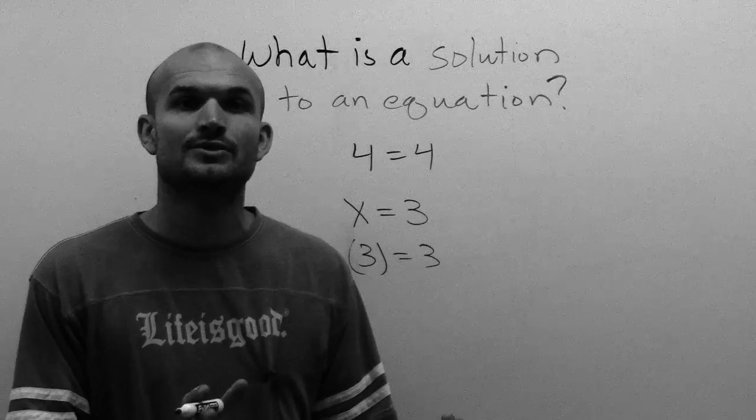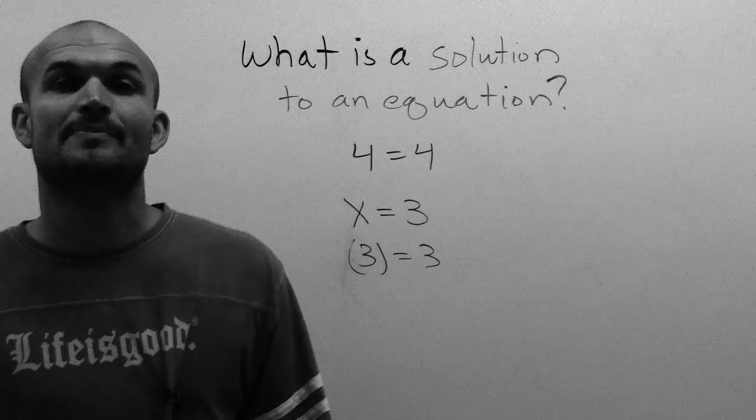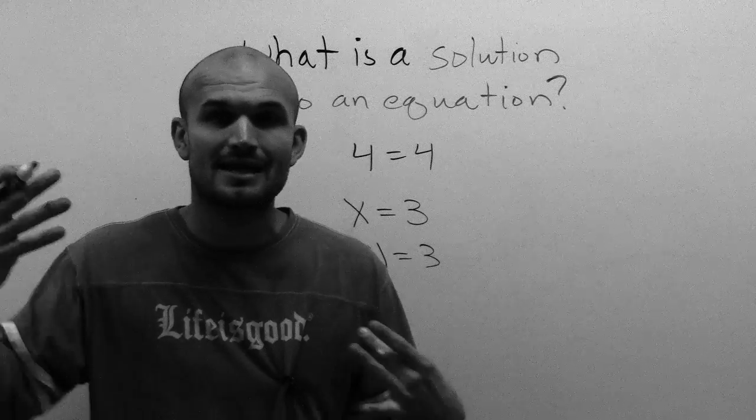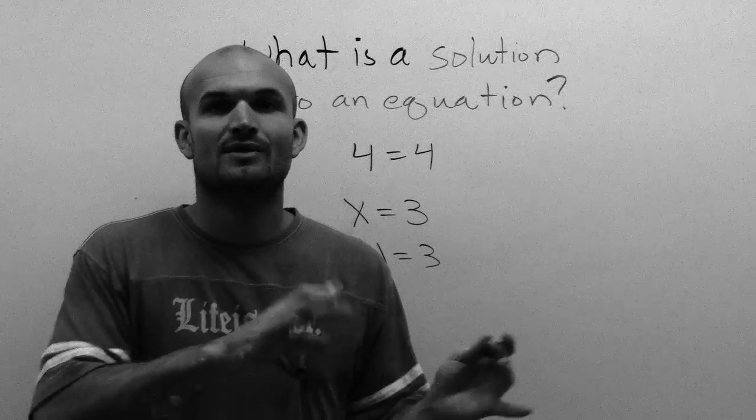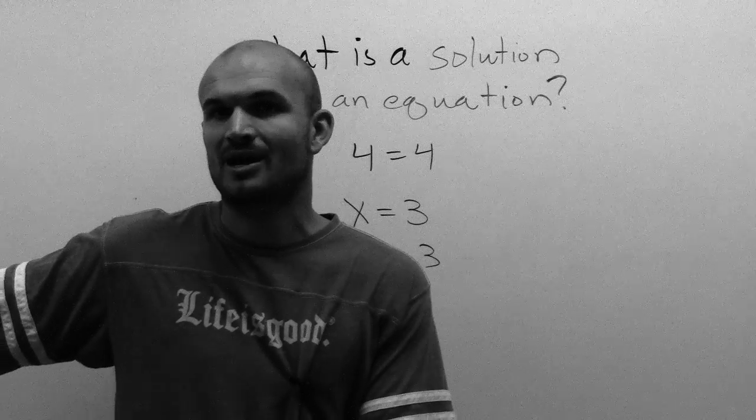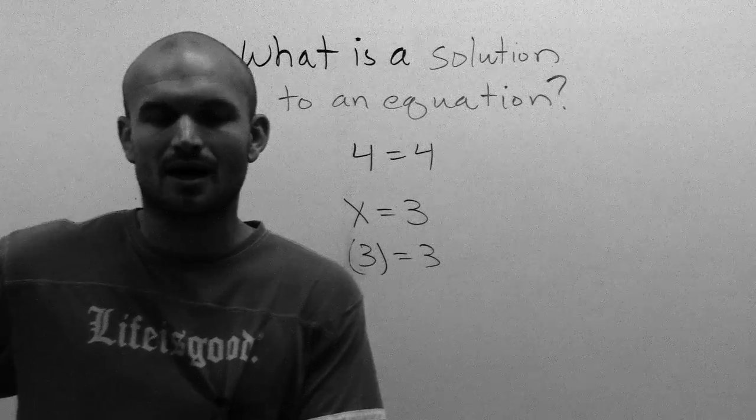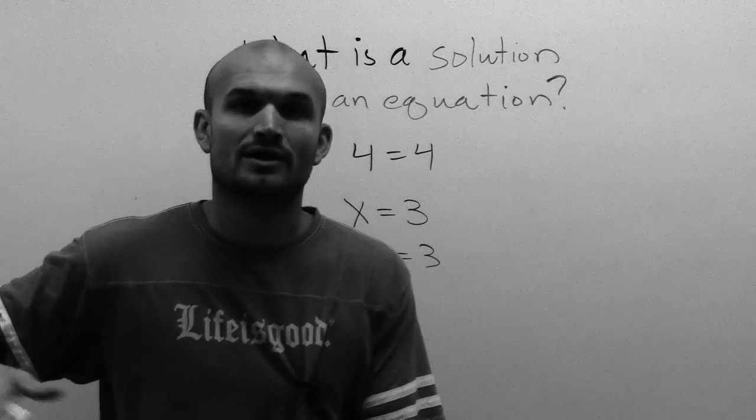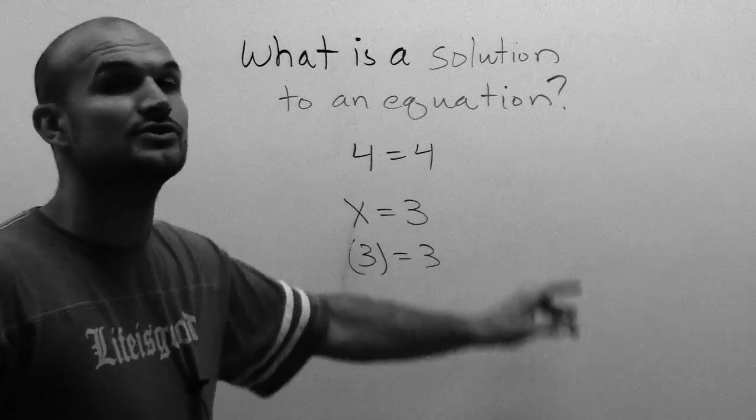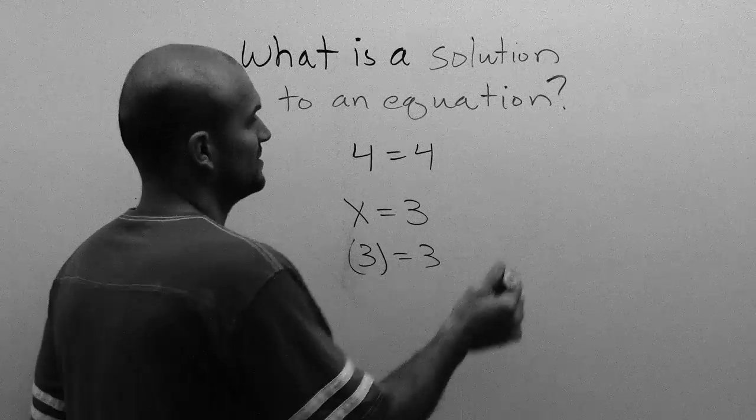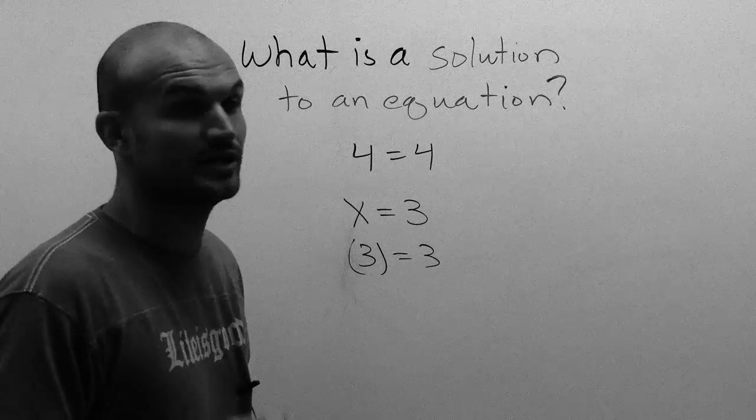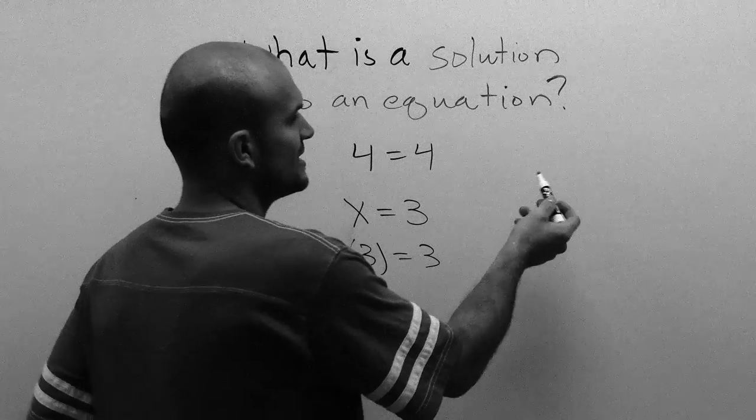And this kind of works into when we start doing one step equations, and even sometimes two steps. A lot of students can start doing this in their head. So they want to bypass the stuff I'm going to talk about with our operations of equality. But it's very important for you, even though you can do it in your head, to still do the stuff we're going to be doing in some other videos of equality.